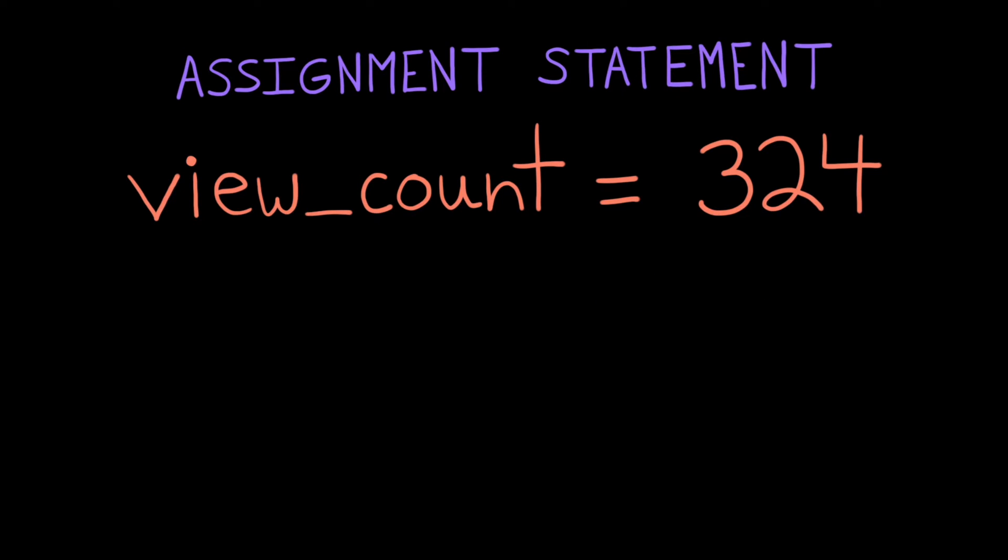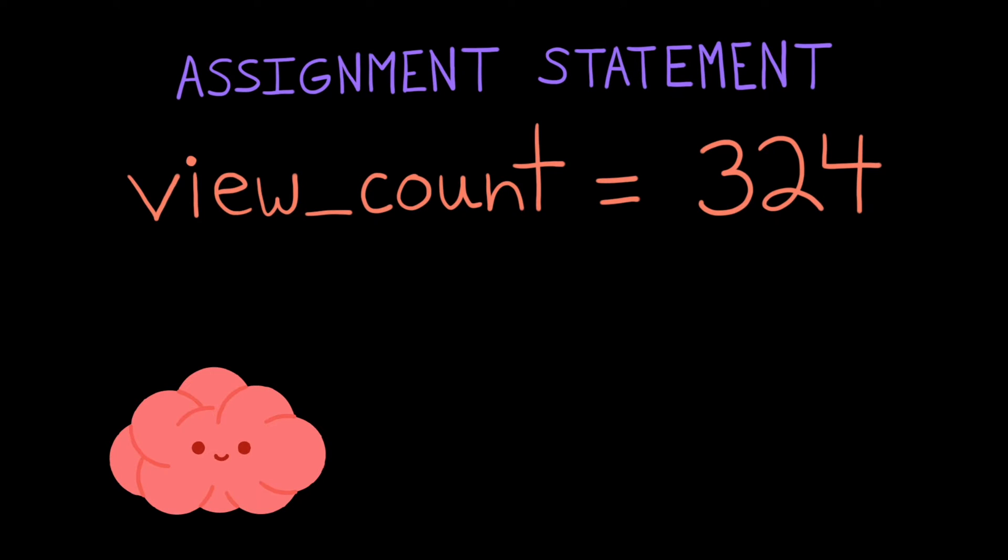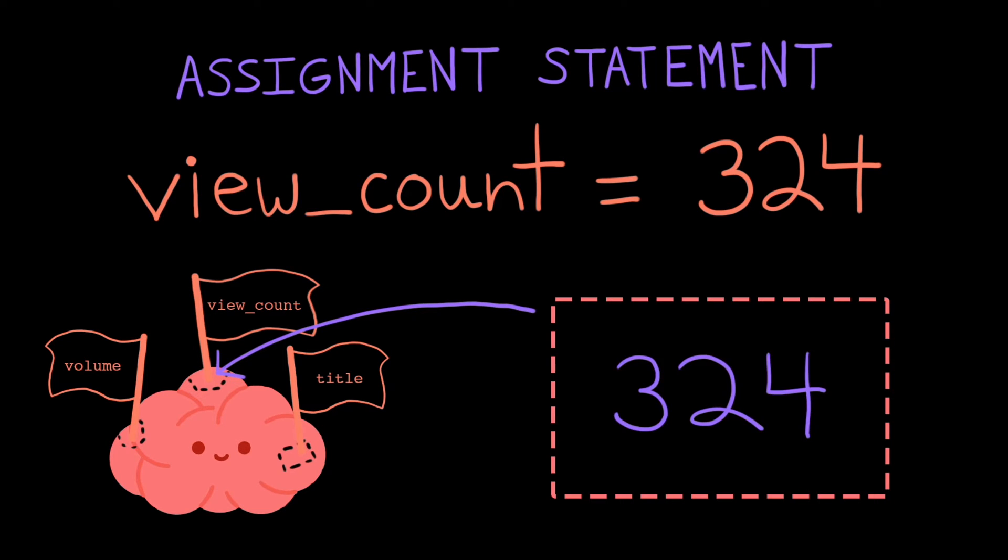When the computer executes this instruction, it'll go off to its short-term memory and look for a label with the name view_count. If it doesn't find one, it'll set aside or allocate a new chunk of its memory, and then label that location with the name view_count. Finally, it'll store the value on the right-hand side of the assignment operator in that location.